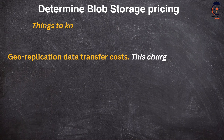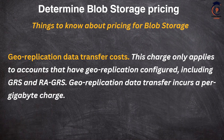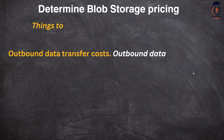The fourth factor is geo replication data transfer cost. This charge only applies to accounts that have geo replication configured, including GRS and RA-GRS. Geo replication data transfer incurs a per-gigabyte charge. Geo replication means the data is not only in one data center — for example, data in the US may also be replicated to North America or South Asia. In those cases, this replication transfer charge applies.